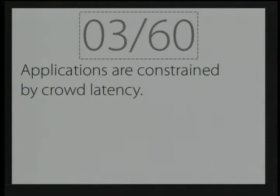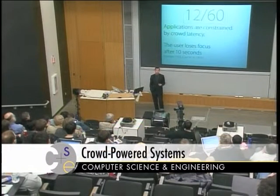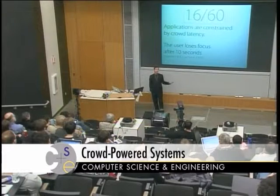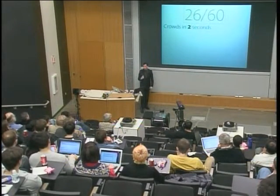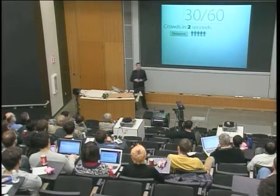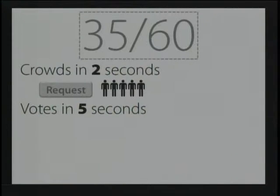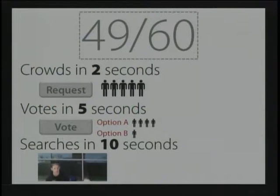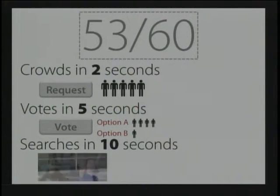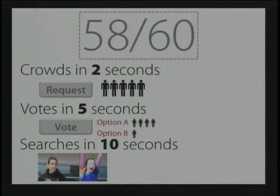Here's an example: this is a Go button. When we click it, a timer counts up to 60 seconds — the best that innovative work from the University of Rochester was able to produce from the crowd. Unfortunately, after just 10 seconds, we know the user has already lost their connection to the task. Our goal is to create on-demand real-time crowds. I'm going to introduce ways to produce crowds in two seconds: make a request and just a few seconds later get a group of five or more people. Use that to do votes in five seconds, or execute large searches in 10 seconds — like choosing the best frame in a longer video.